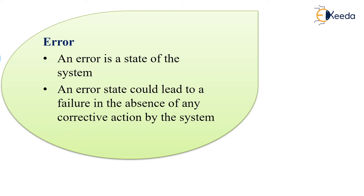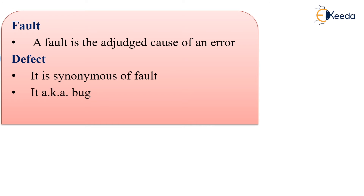When an error is found by a tester, what is it called? It is called a defect. The defect is the same as a fault — one and the same meaning. When the defect is accepted by the development team or the software engineering team, then it is called a fault.